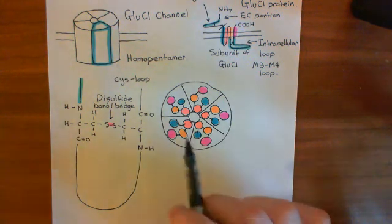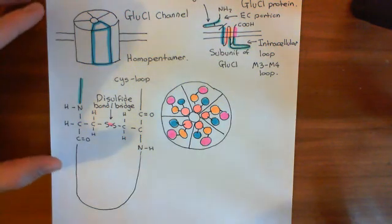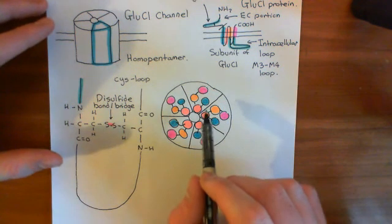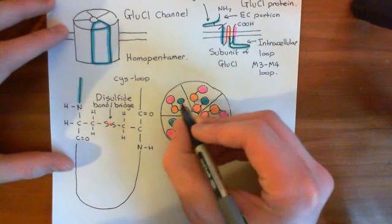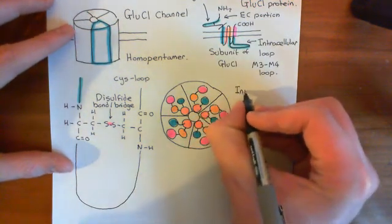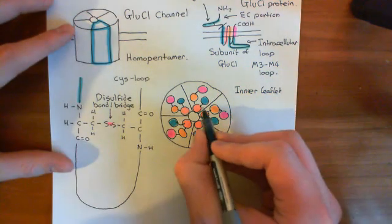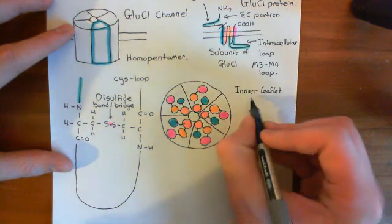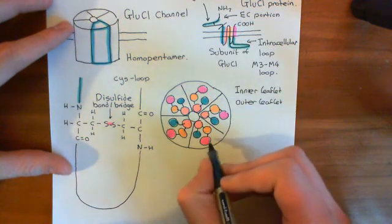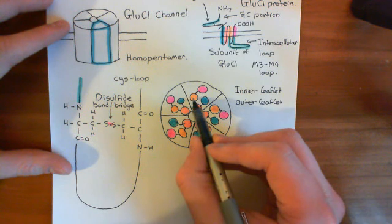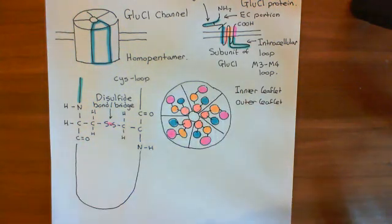Now let's look at the actual structure of these M2 alpha helices lining the pore. There's also useful terminology: the inner portions, mainly consisting of the M2 alpha helices, are known as the inner leaflet of the GluCl channel. The more peripheral portions would be the outer leaflet — so the M4 alpha helices would most definitely be the outer leaflet, while the M2 alpha helices are the inner leaflet.